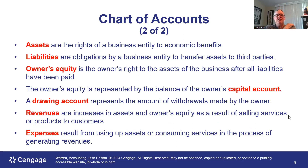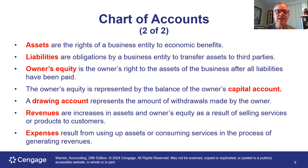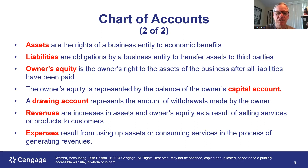Looking at the chart of accounts: assets are things the company owns that provide an economic benefit; liabilities are obligations to people outside the company; owner's equity is the owner's claim against the company's assets after liabilities are paid. Owner's equity is represented by the capital account, plus a drawing or withdrawals account. Then we have revenues — increases in assets from selling services or products — and expenses. The rules for each of these account types will be different.